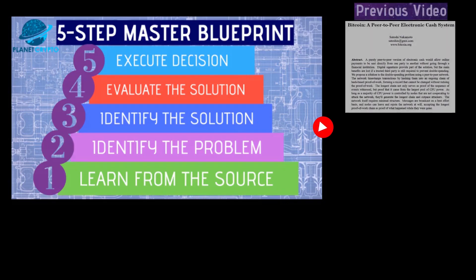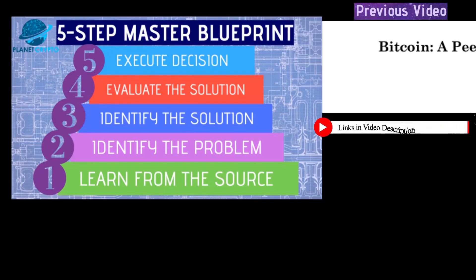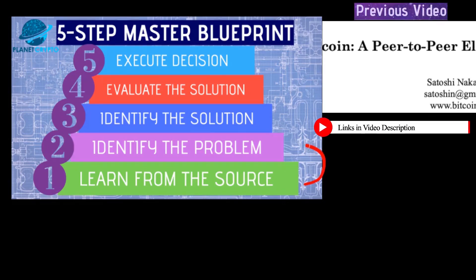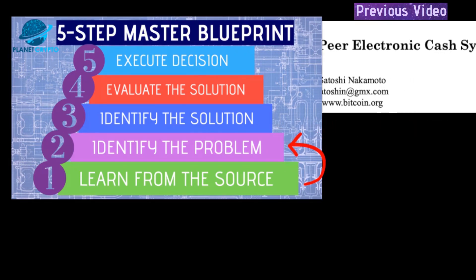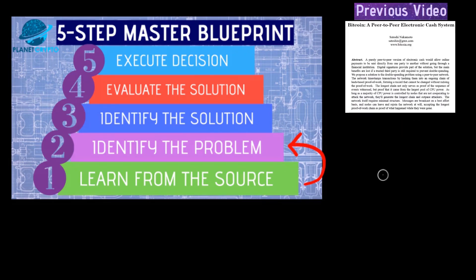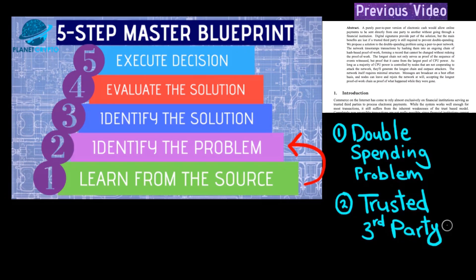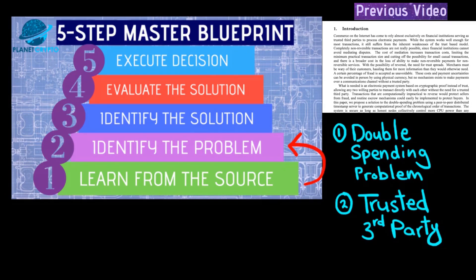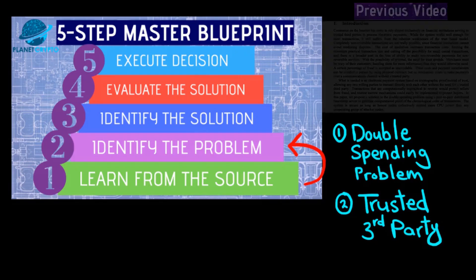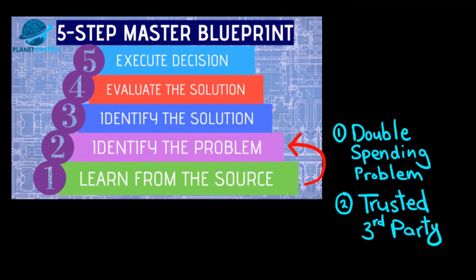In the last video, using Planet Crypto's 5-step master blueprint, we took our first step — learning from the source. We started reading the Bitcoin white paper and successfully identified not one, but two problems: the double spending problem and trusted third party. In this video, we will see what the current system looks like in the picture of Bitcoin, continuing from where we left off.